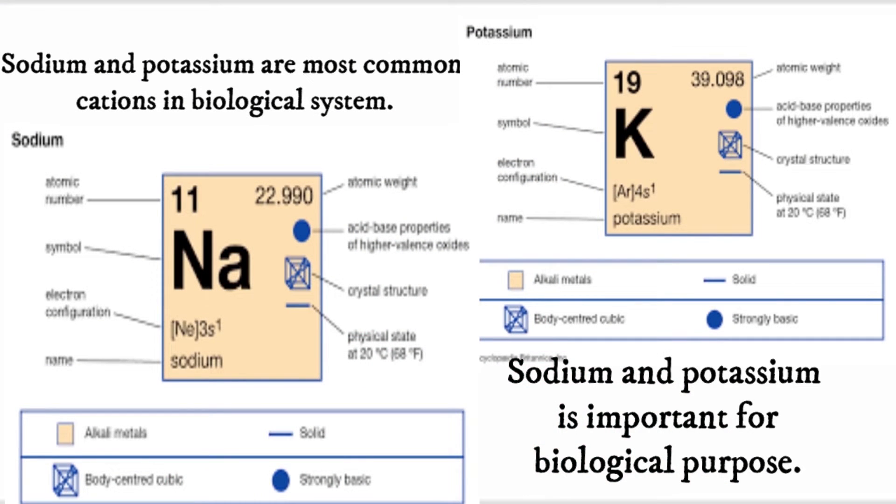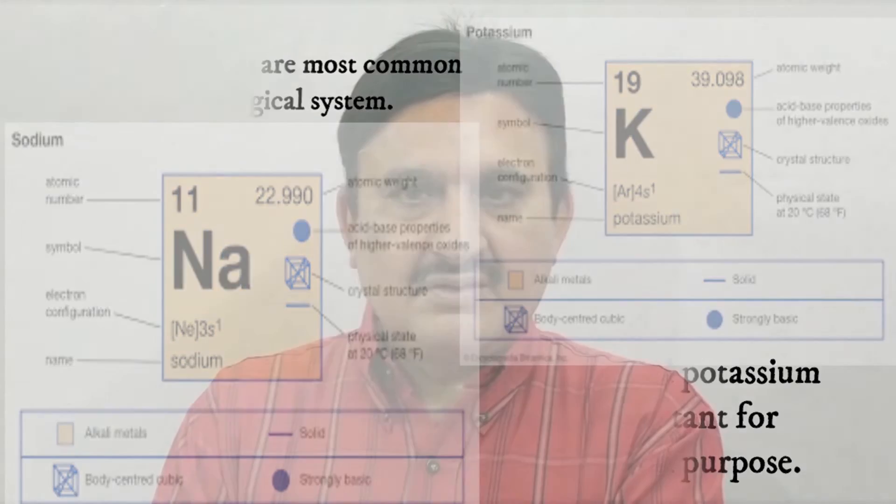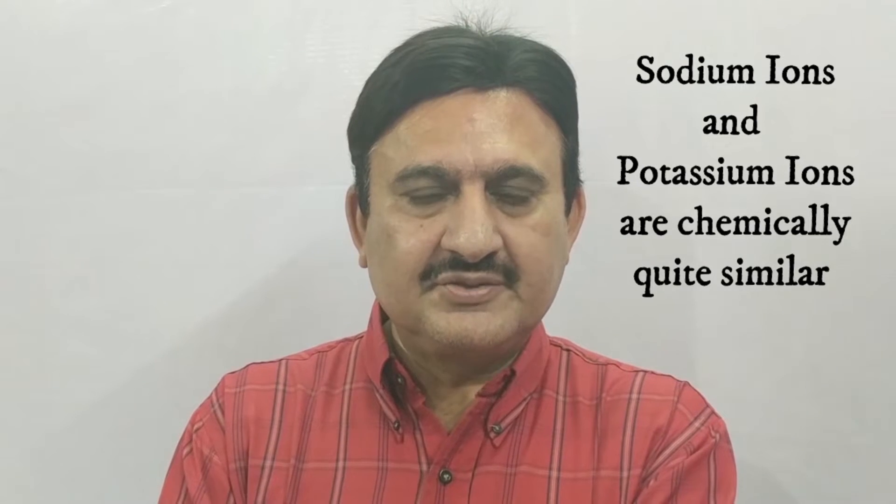Sodium and potassium are important for biological purposes. They are the most common cations in biological systems. Sodium ions and potassium ions are chemically quite similar but surprisingly they differ greatly in their biological activities. It has been found that an average human body weighing 70 kg contains about 90 grams of sodium and 170 grams of potassium. The most salient feature is that potassium ions are present in higher concentration inside the cell than sodium ions, while their respective concentrations are reversed outside the cells.